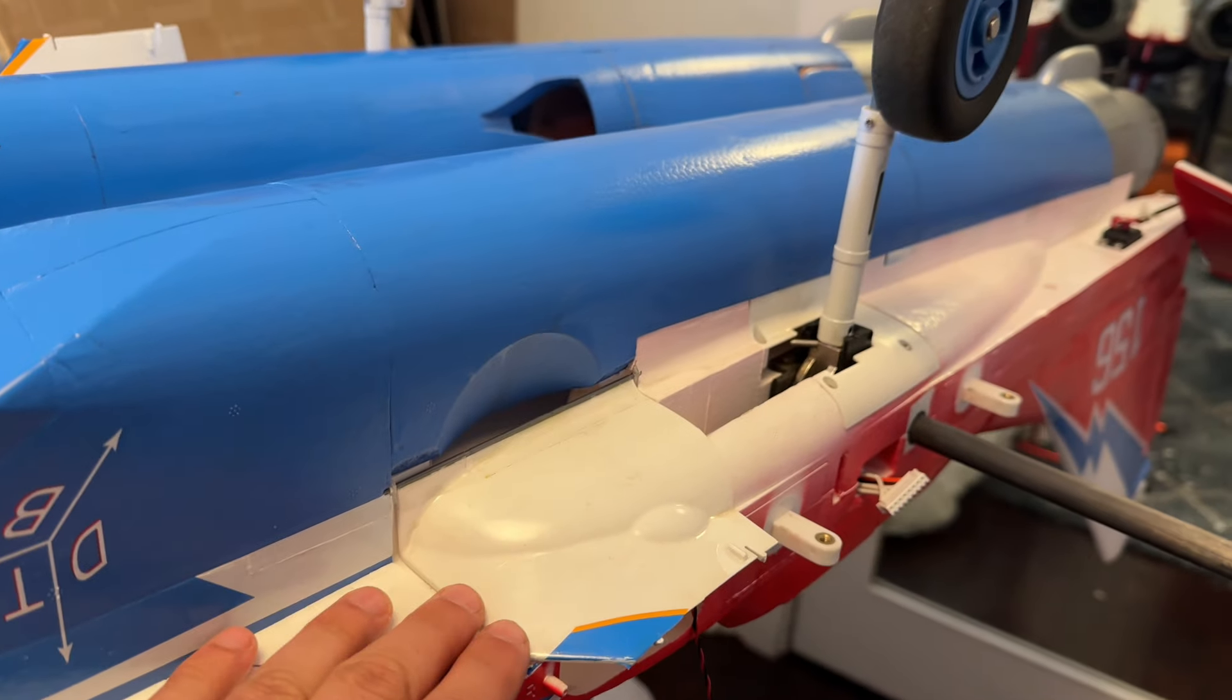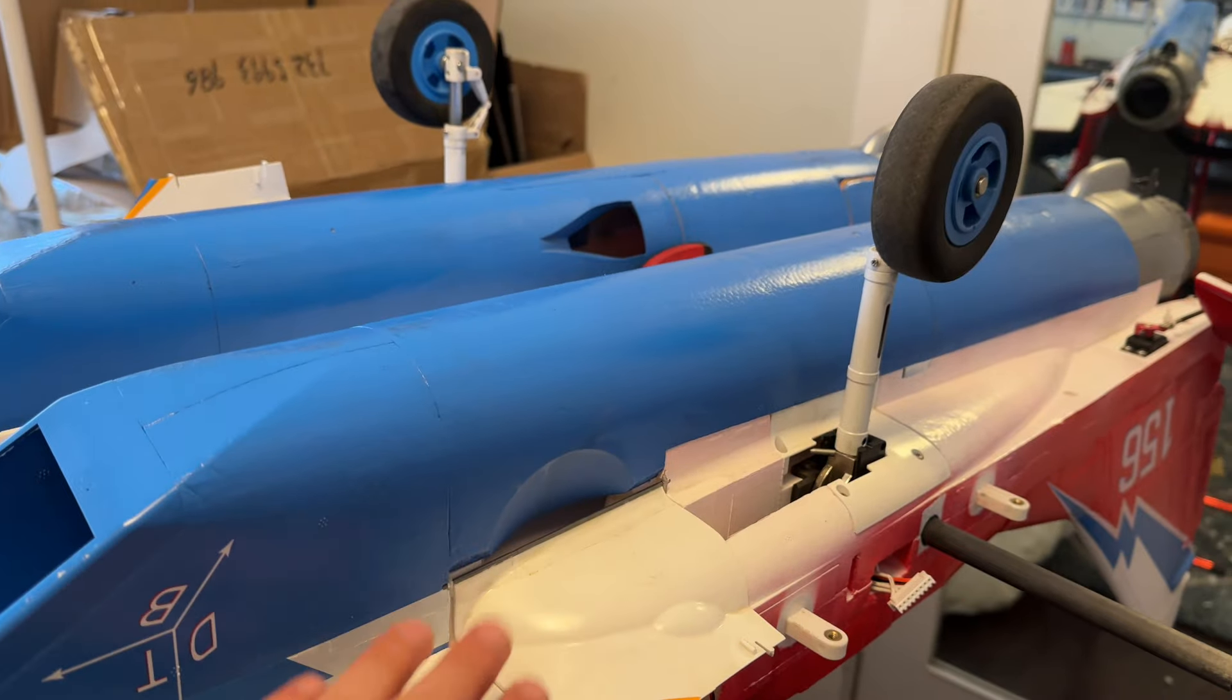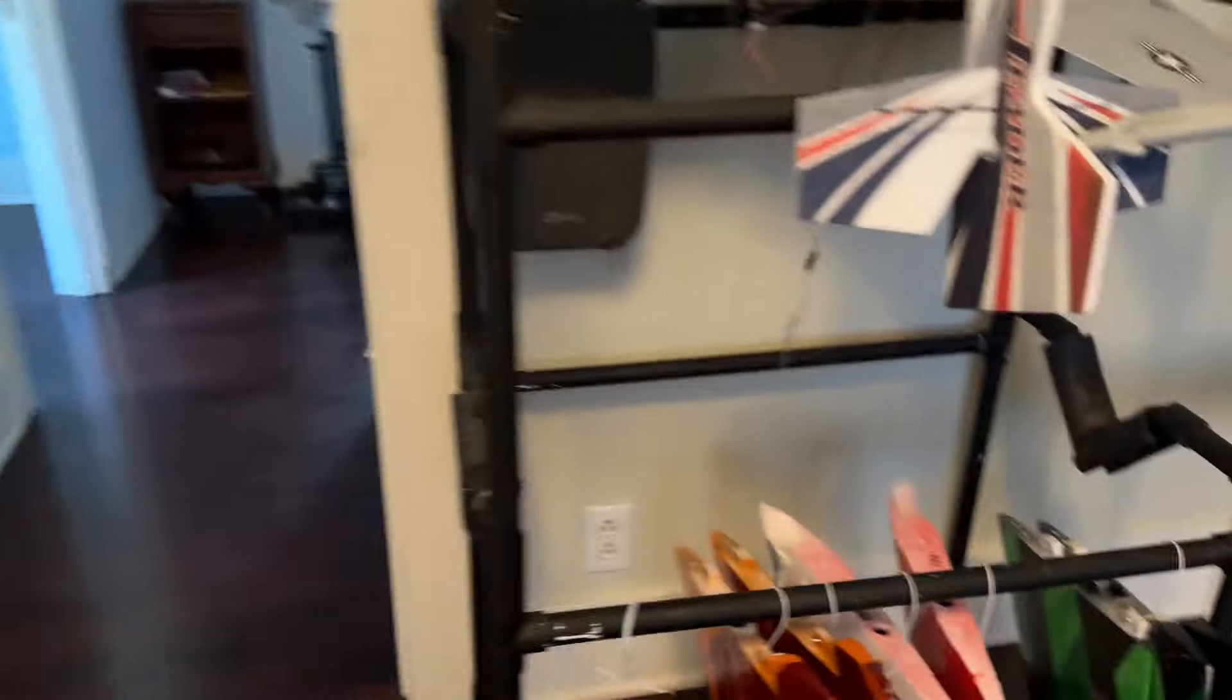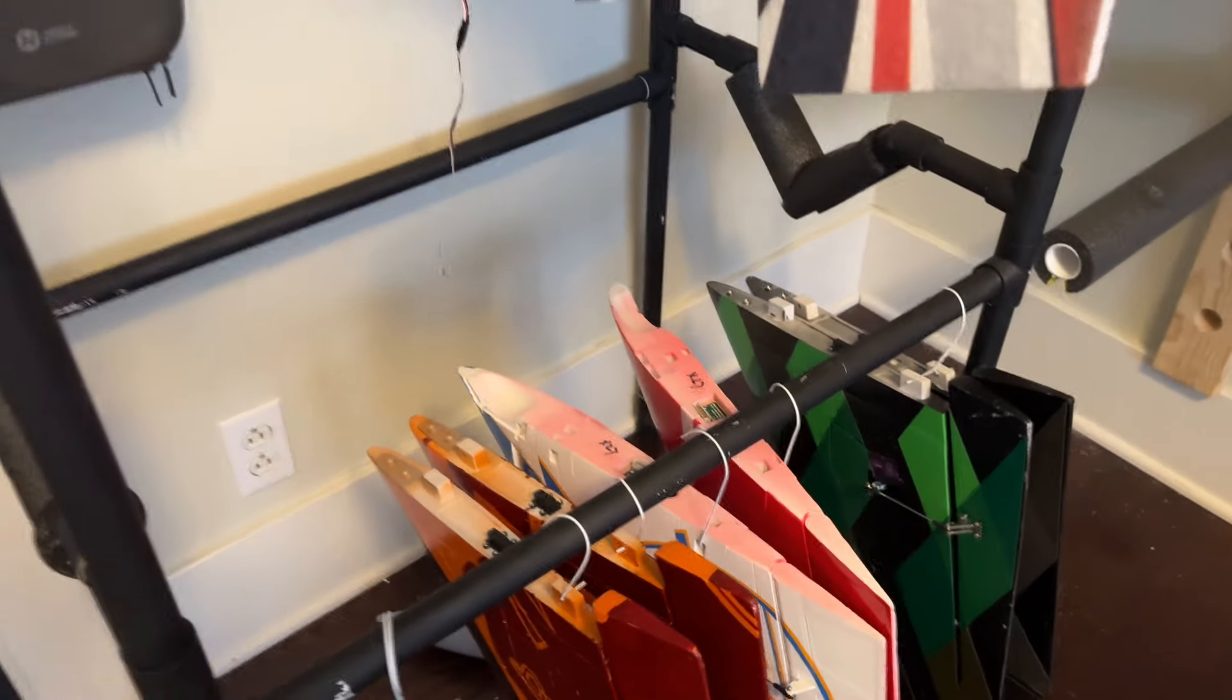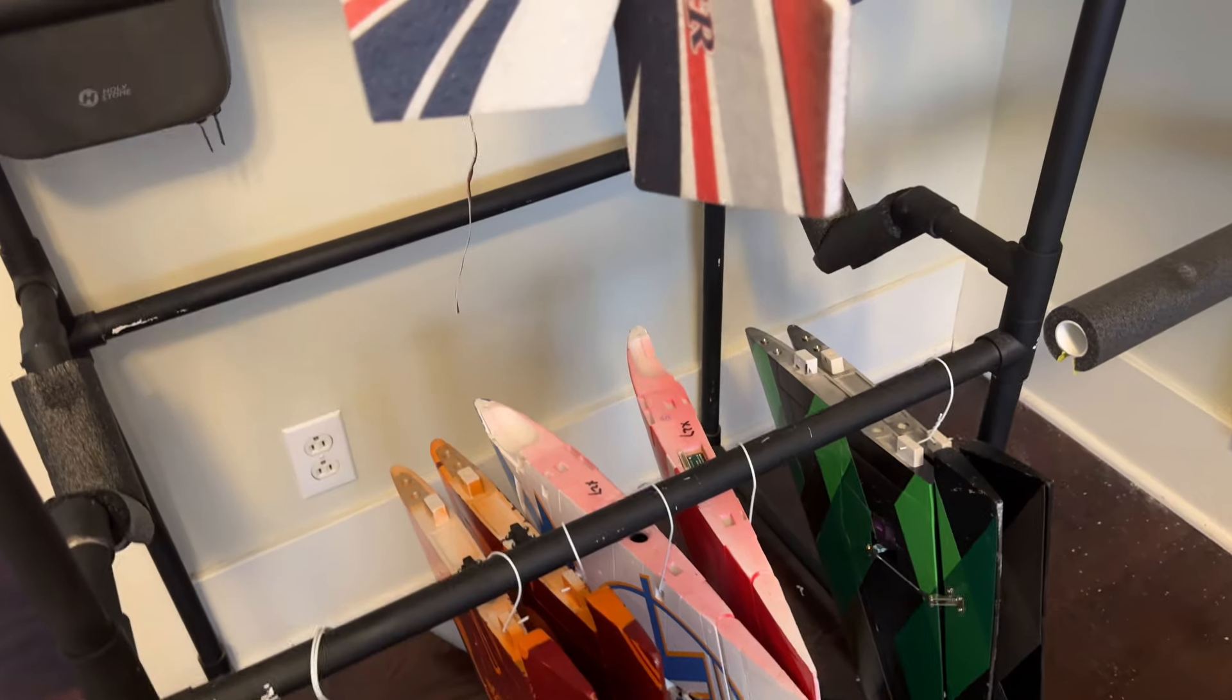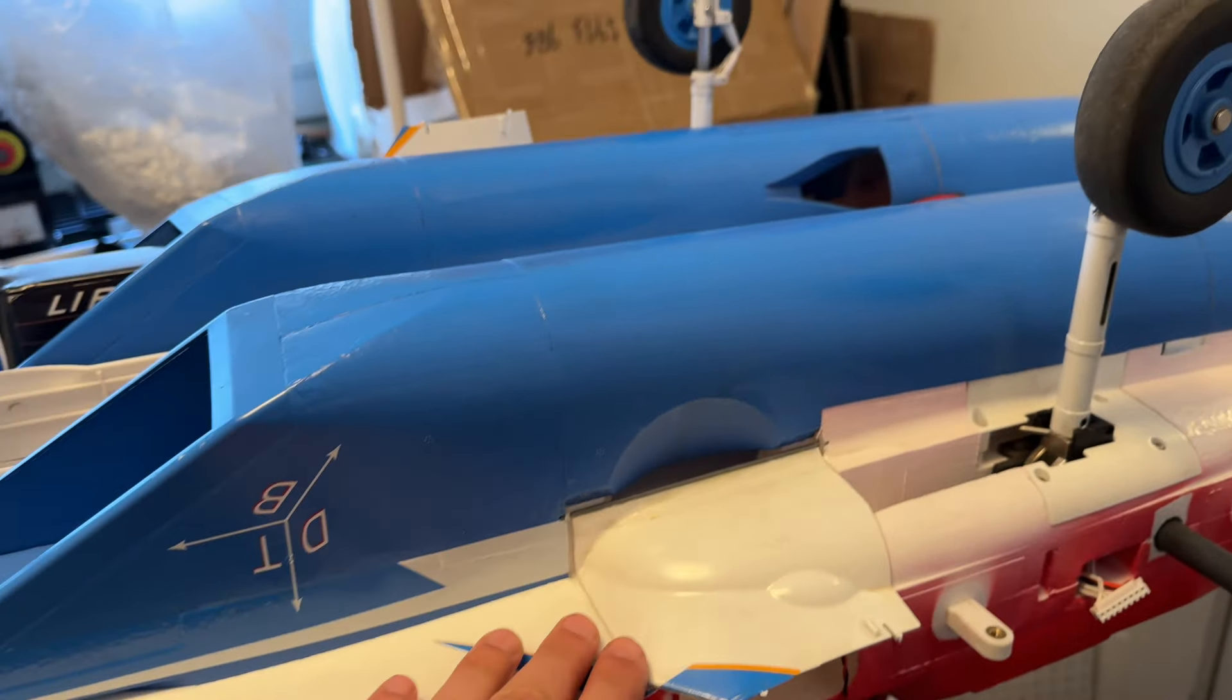So what I'm doing is I'm moving the main landing gear doors internally onto the fuselage. Normally, you've got the doors which are mounted to the actual wings. And honestly, I think they stick out so much and they just make it really weird for storage. And also, the real ones do actually have the doors here on the fuselage.